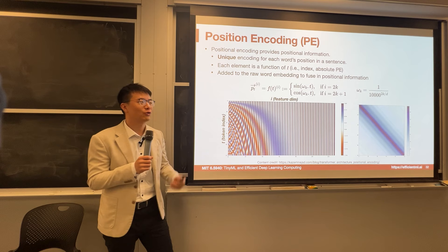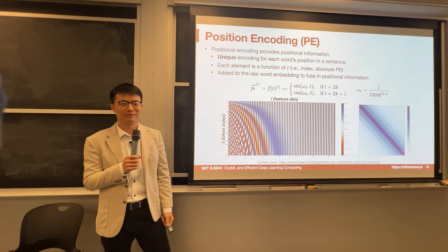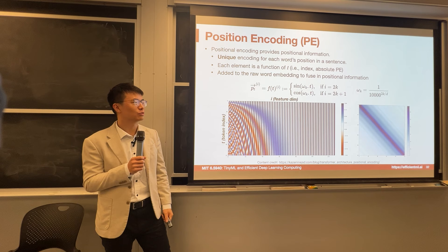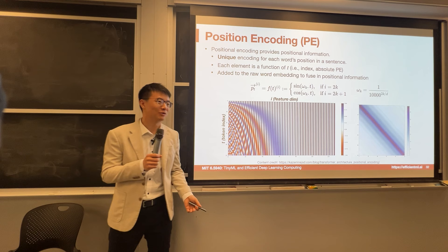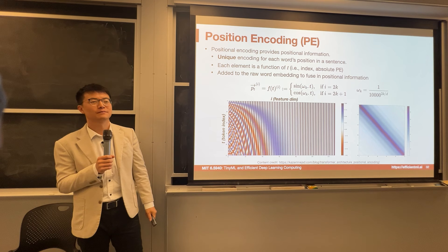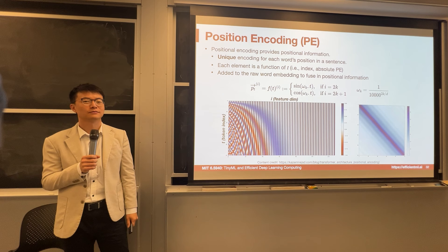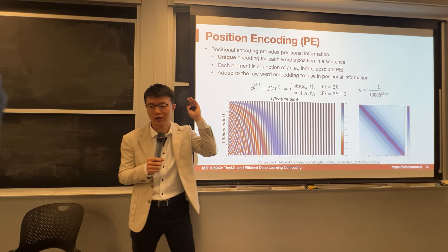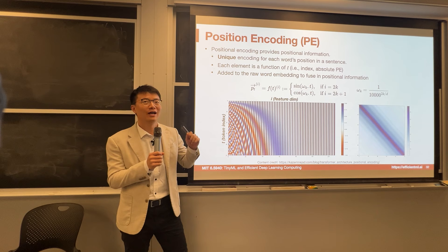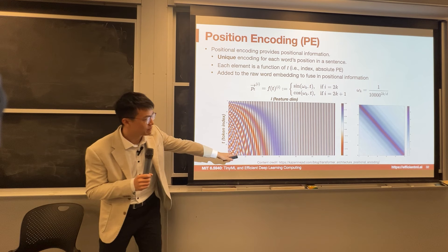The positional encoding is periodic — since it uses sine and cosine, you can handle long inputs by using different frequencies to provide unique encodings. The raw word embedding is added with this positional information. This is the original paper's approach using this simple idea. We're going to talk about design variants and more advanced techniques to replace this in the second section of this lecture.